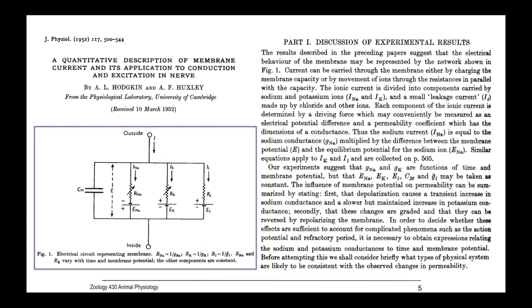Current, I, can be carried through the membrane either by charging the membrane capacity or by movement of ions through the membrane, through the resistances in parallel with the capacity. The ionic current is divided into components carried by sodium and potassium ions, INA and IK, and a small leakage current, IL, made up by chloride and other ions.